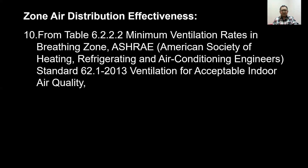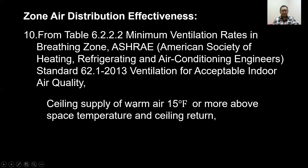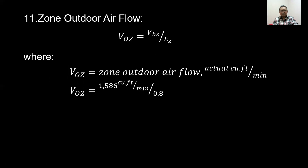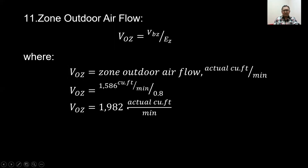For air distribution effectiveness, from table 6.2.2.2 of ASHRAE standard 62.1-2013, for ceiling supply of warm air 15°F or more above space temperature and ceiling return, the effectiveness factor is 0.8. So we divide the outdoor airflow of 1,586 CFM by 0.8, giving us 1,982 actual cubic feet per minute.